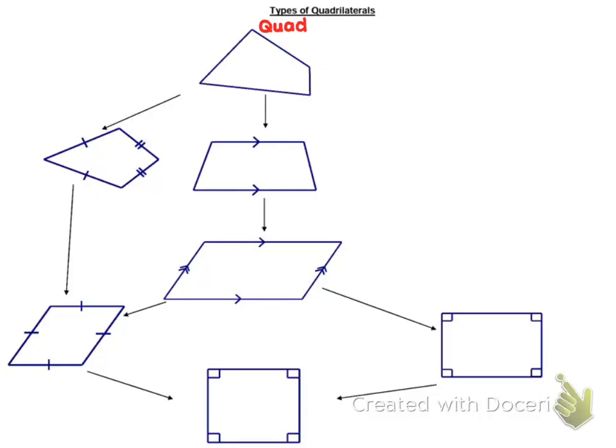Hi guys, this video is going to be on the different types of quadrilaterals. I find the most useful way to think of the types of quadrilaterals is as a family tree, so you just have to remember who's related to whom. Let's start with the most basic quadrilateral.